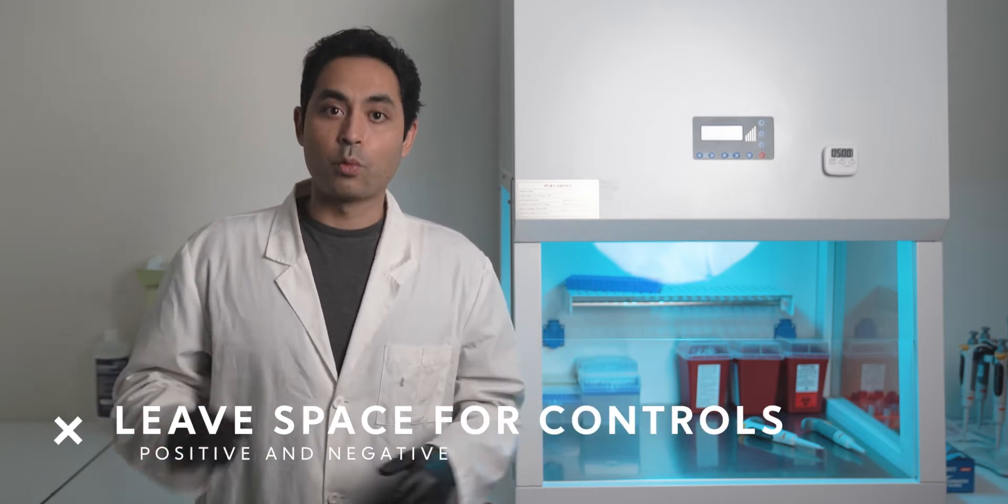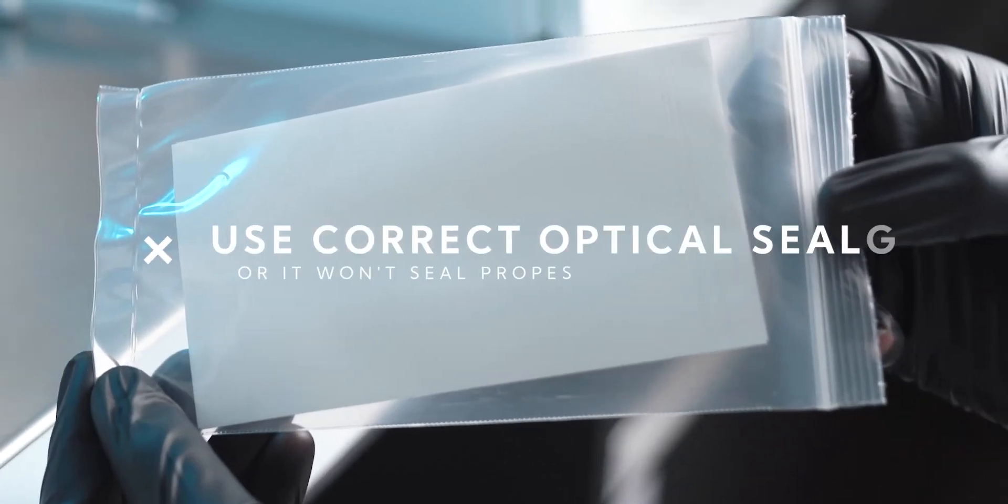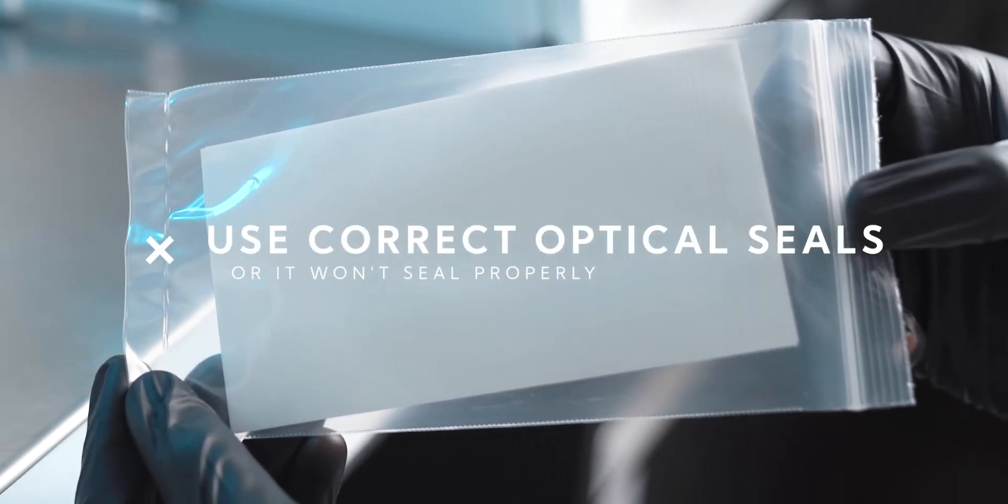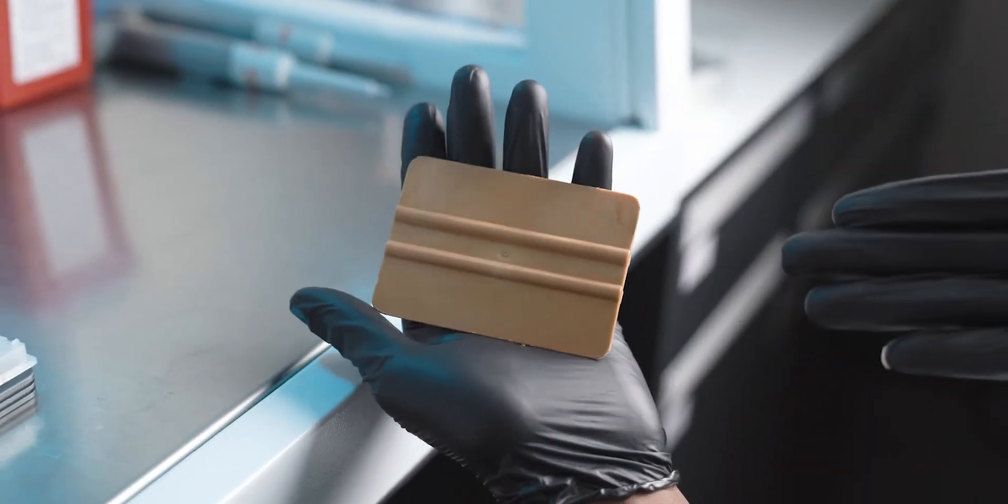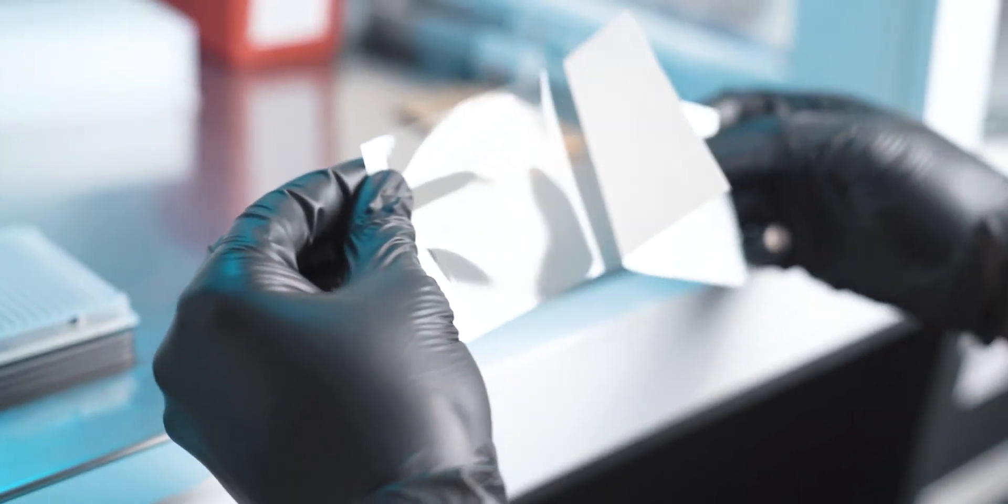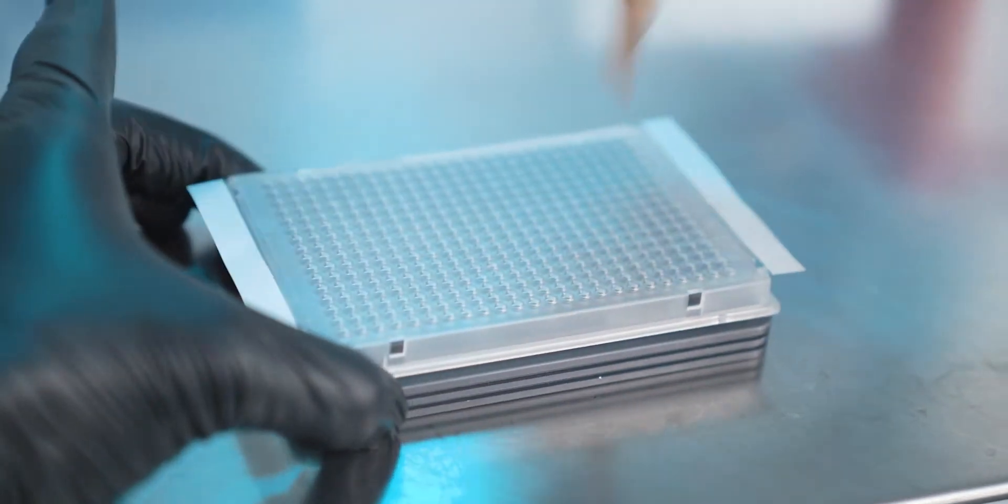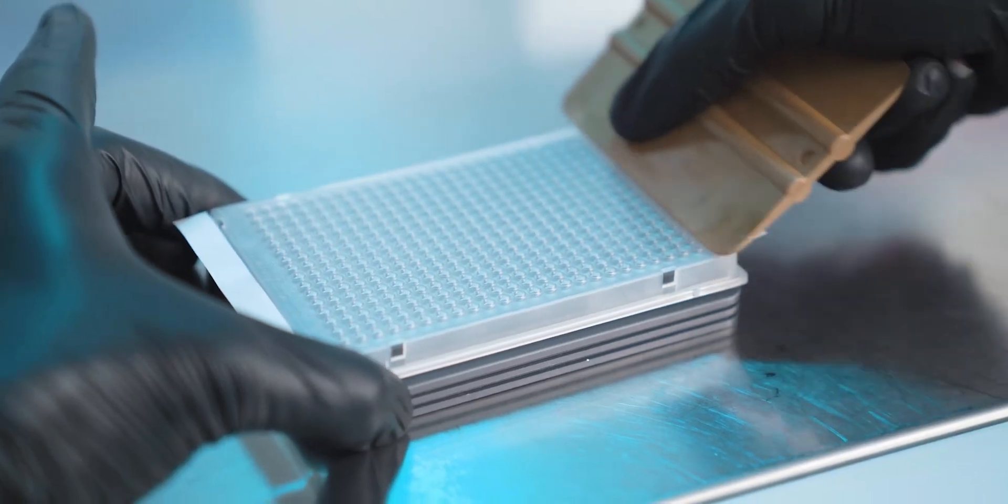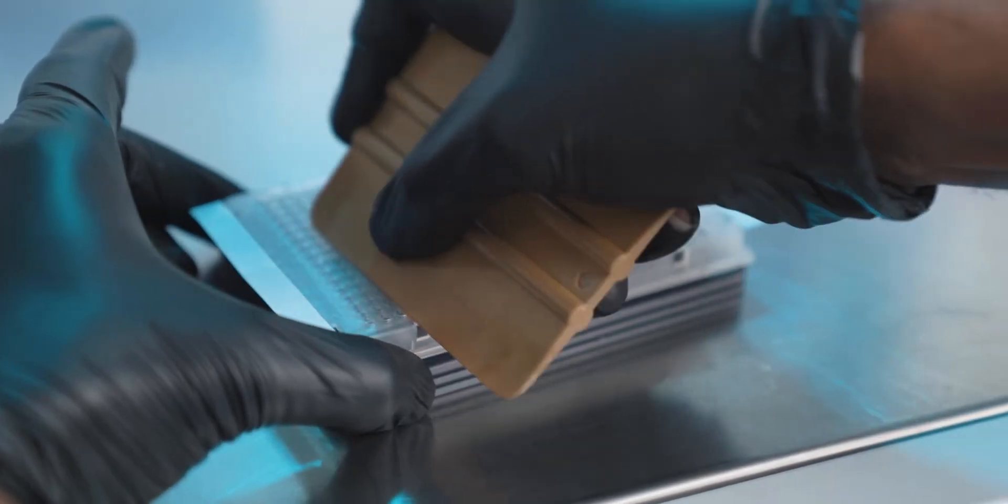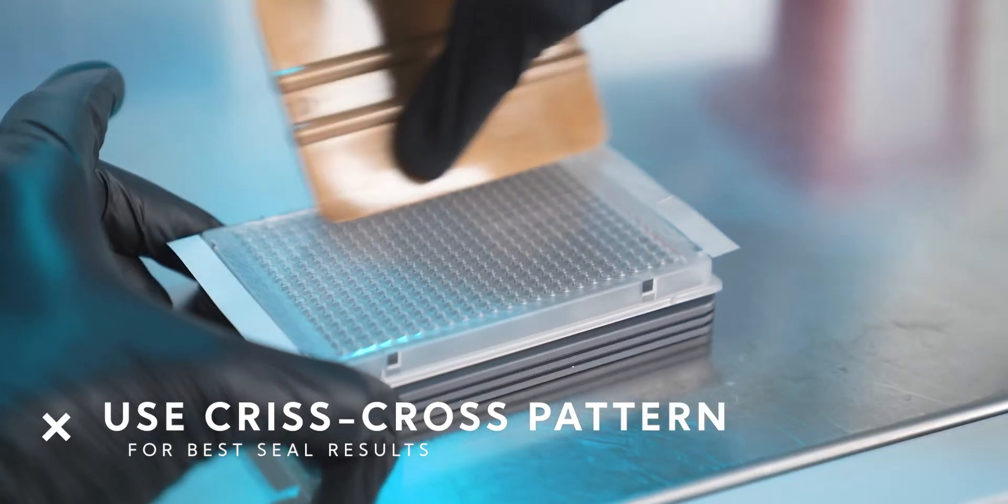When everything is mixed, you want to properly seal your plate. Make sure to use the correct optical seals if you're doing qPCR. You can use the scraper to seal your plate. If you want to get a very good seal, make sure you do a crisscross pattern on the wells.